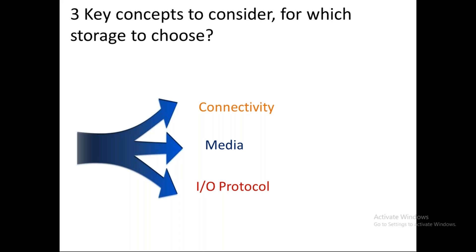The third factor is the I/O protocol — how data is exchanged between the processor and storage. SCSI is a block-level I/O protocol used for block-level storage. NFS (Network File System) is a protocol for sharing data at the file level. CIFS (Common Internet File System) supports both file-level and block-level storage exchange. These three factors — connectivity, media, and I/O protocol — must be assessed before installing any storage variation.